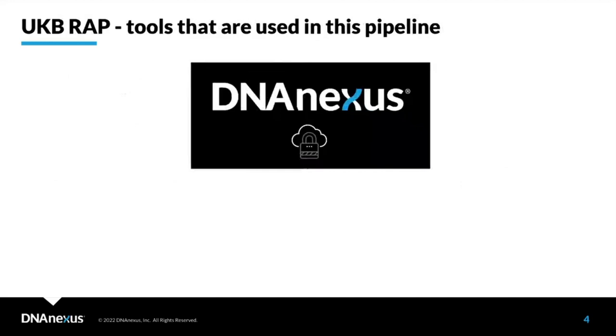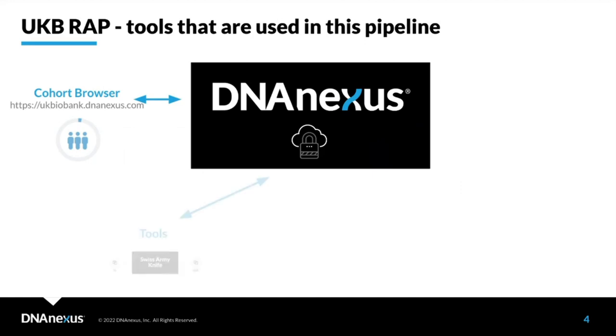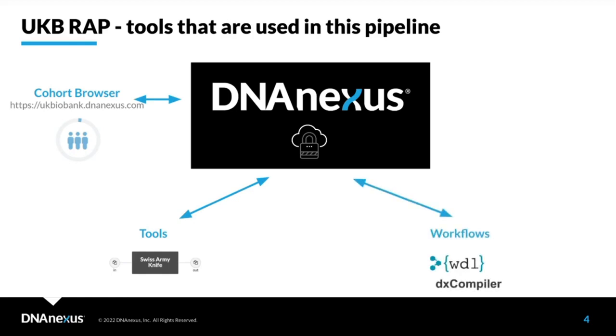If you've been watching our webinars, you may have seen this slide before. Here I'll show you the tools we'll be working with today. We'll start with Cohort Browser, which helps you intuitively explore data on our platform. We'll also use Swiss Army Knife for array data quality control, the REGENIE app which is a newly released wrapped REGENIE, WDL pipelines compiled with dx-compiler, and JupyterLab for running code as Jupyter notebooks.